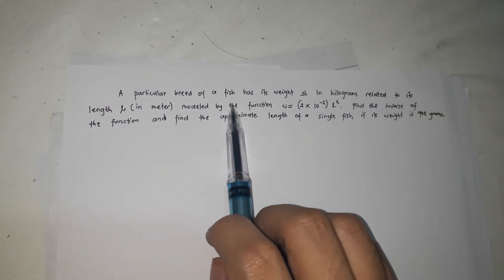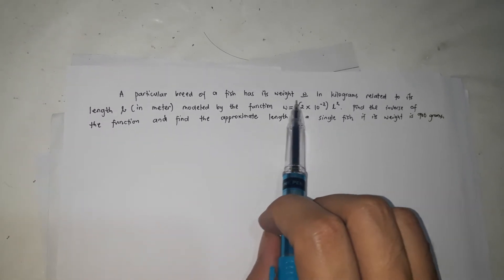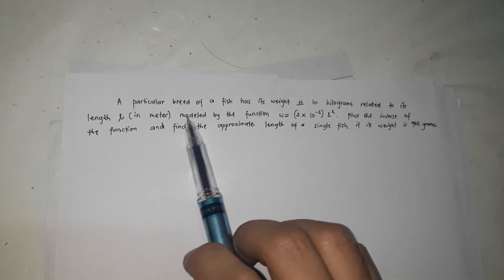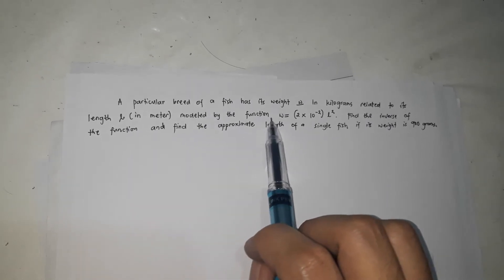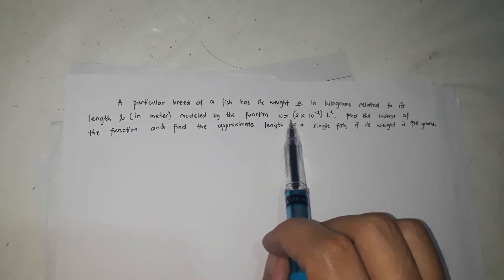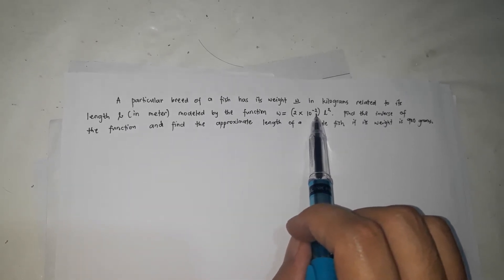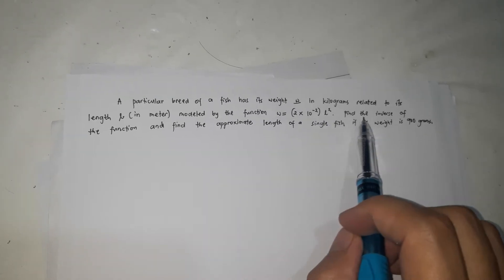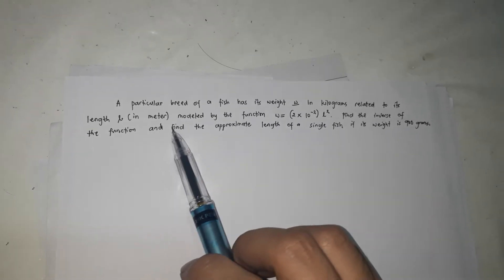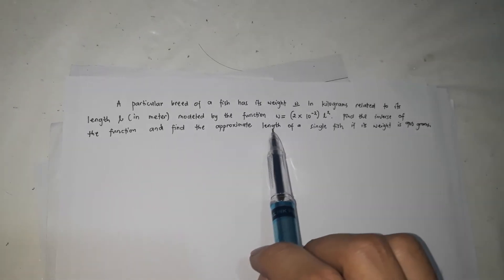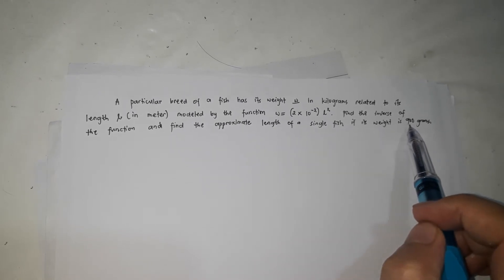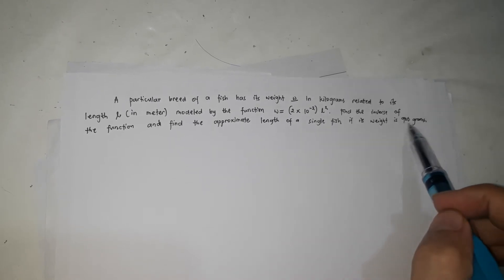A particular breed of fish has its weight w in kilograms related to its length l in meters, modeled by the function w = 2 × 10^(−2) × l². Find the inverse of the function, and find the approximate length of a single fish if its weight is 900 grams.